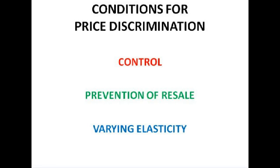Prevention of resale is definitely another condition. We can't have any leakages — we can't have one buyer buying a good at a certain price and then selling it at a higher price to somebody else who wouldn't have been able to buy it at that price. Say I got on the bus and bought a child's ticket, which would be against the rules.